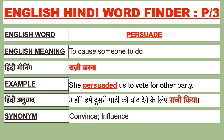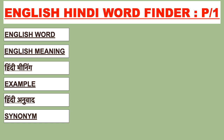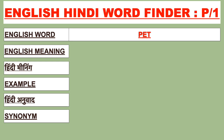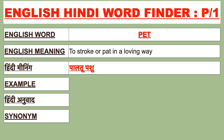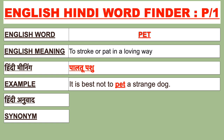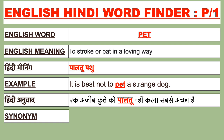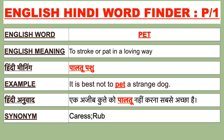Synonyms of persuade are convince and influence. Our next English word is 'pet'. The English meaning of pet is to stroke or pat in a loving way. Pet ka Hindi meaning hai 'paltu push' (puchkarna). For example: It is best not to pet a strange dog. Isi Hindi mein bolenge: Ek ajeeb kutte ko puchkarna sabse achcha nahi hai. Synonyms of pet are caress and rub.